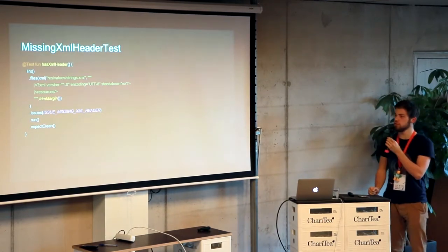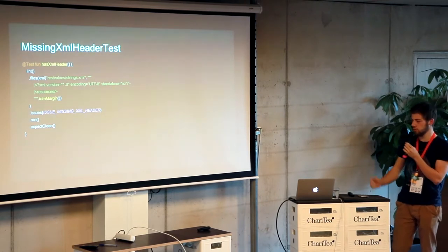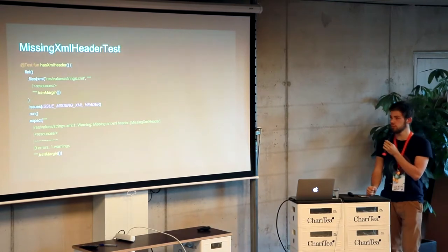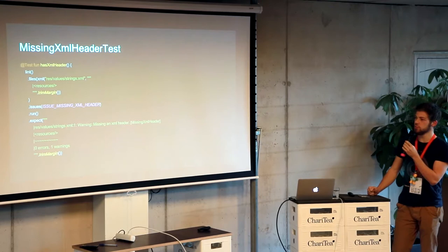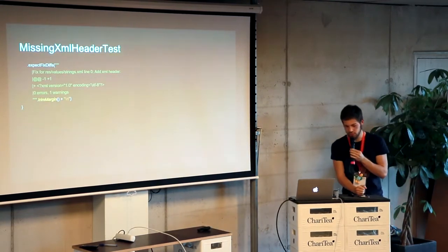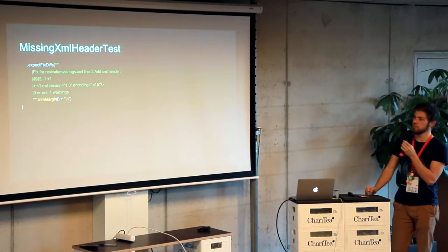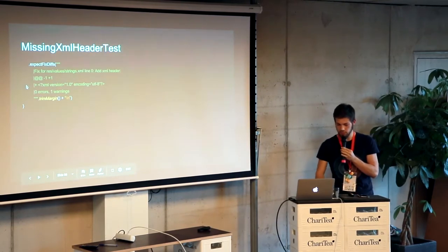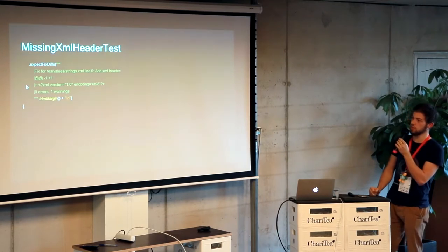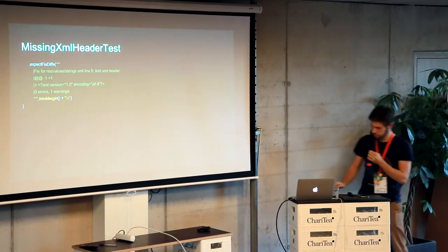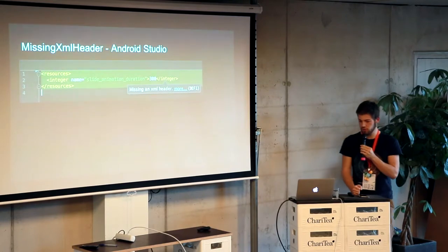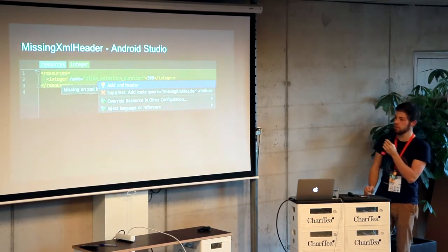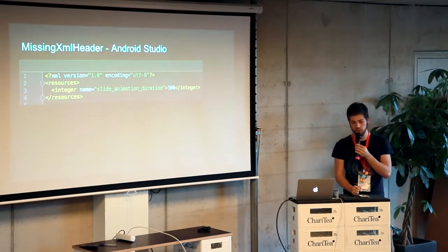We start with a negative test - a resource which has the XML header; we run and expect clean. Then we have a resource file without the XML header. We use the expect function to say it's missing the XML header, and we can also check the diffs using the expectFixDiffs function, which internally uses the git patch file format. Here at line 0 we want to add the header, adding that one line with the XML header. In Android Studio, the entire file is flagged, we can alt-enter, and use our quick fix labeled 'XML header', which automatically inserts it for us.